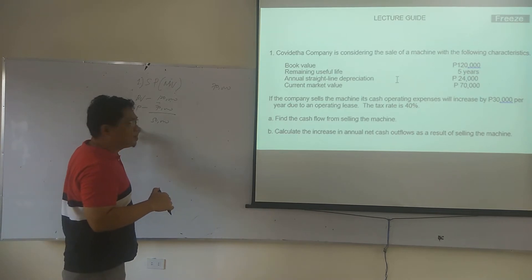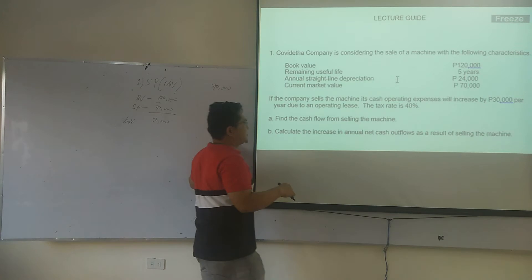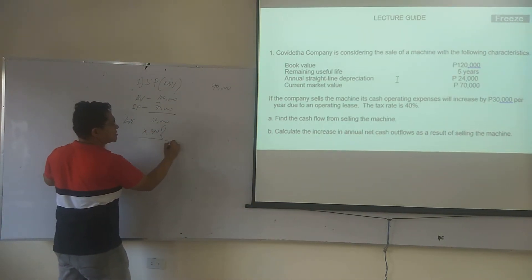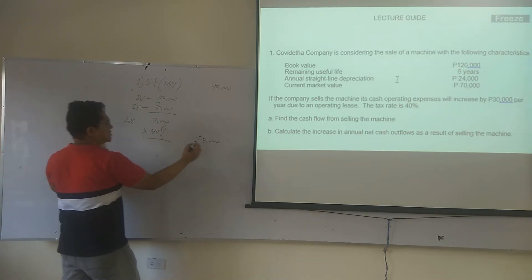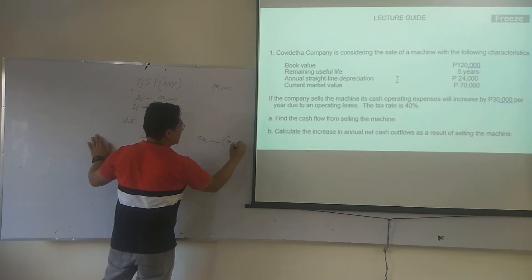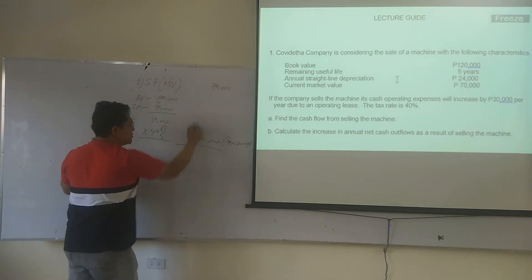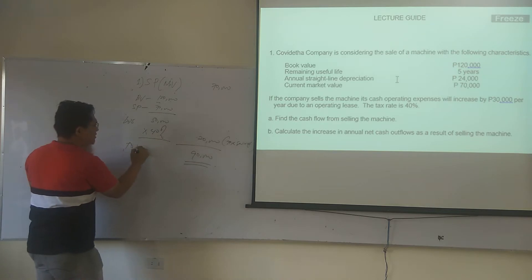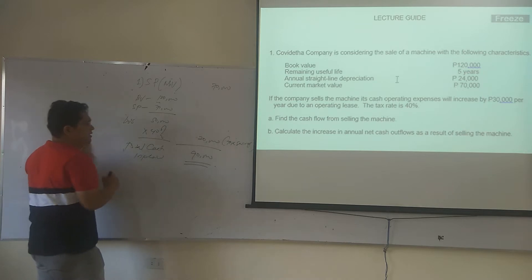Because we incurred a loss, we can apply tax benefits. The tax rate is 40%, so that means this is a tax savings. The total cash inflow is 90,000.